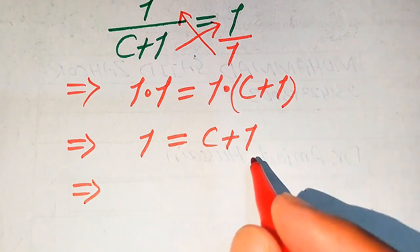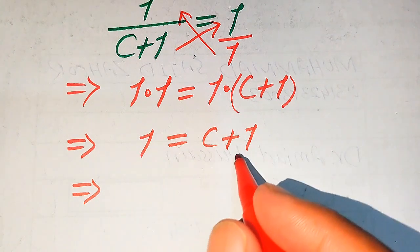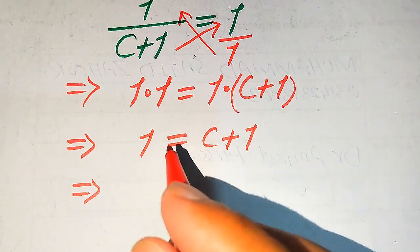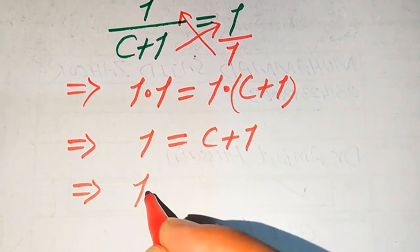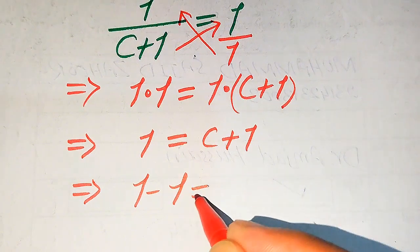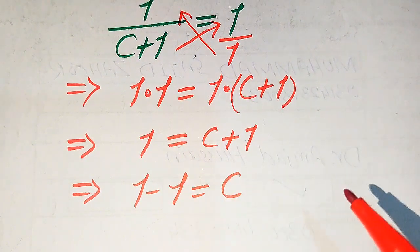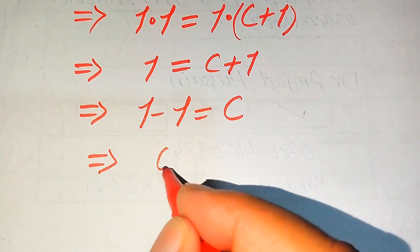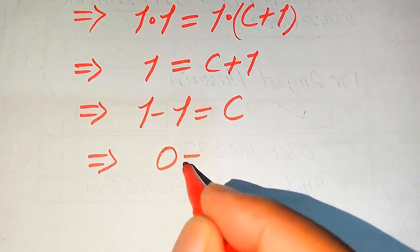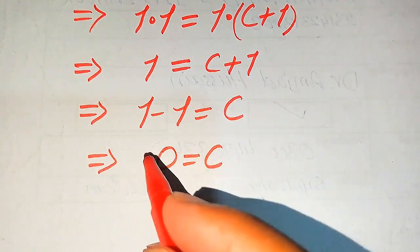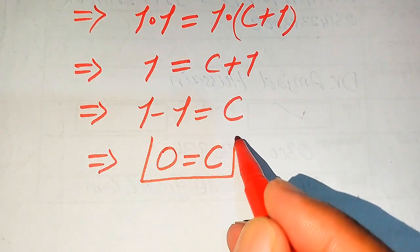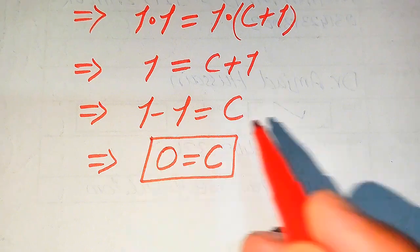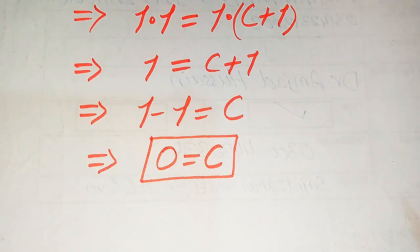This gives us 1 equals to c plus 1. Because we are solving for c, we move the constant plus 1 to the left hand side, where it becomes minus 1. So 1 minus 1 equals 0, giving us c equals 0. This is the only root of the given equation.